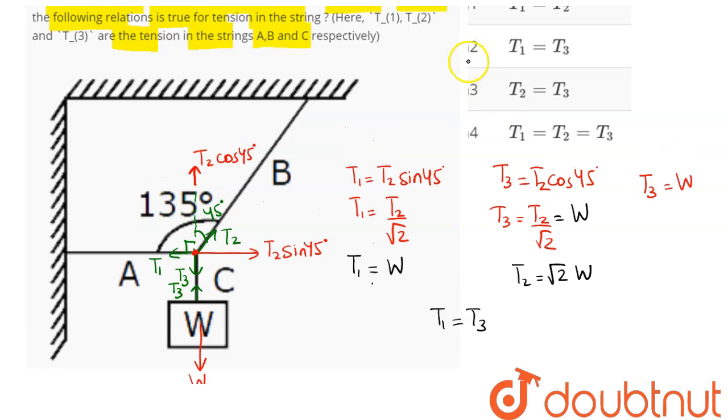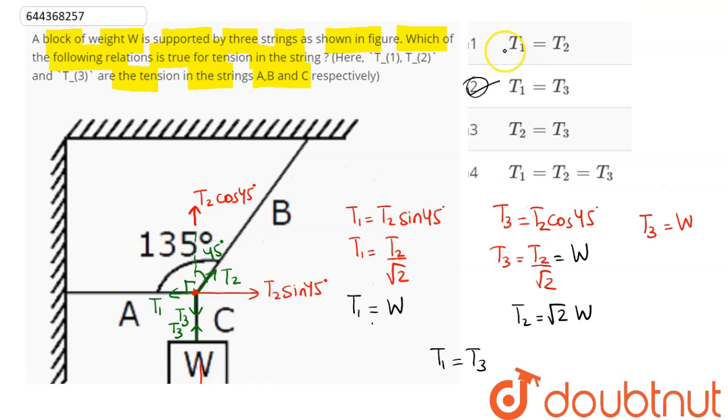So, T1 equal to T3 is the correct answer. So, we can say amongst the four options, T1 equal to T3 that is option number 2 is the correct answer. So, 2 is our answer.